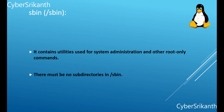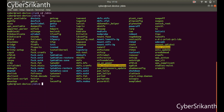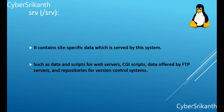Slash sbin: This directory contains utilities used for system administration and other root-only commands. It contains binaries essential for booting, restoring, recovering, or repairing the system, in addition to the binaries in bin. There must be no subdirectories in sbin. Slash srv: It contains site-specific data which is served by this system, such as data and scripts for web servers, CGI scripts, data offered by FTP servers, and repositories for version control systems.